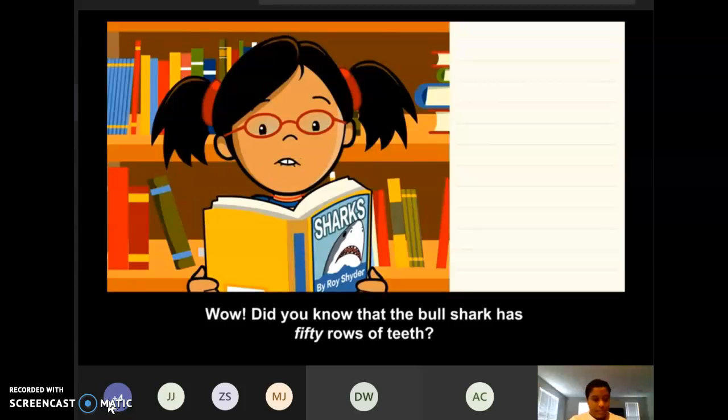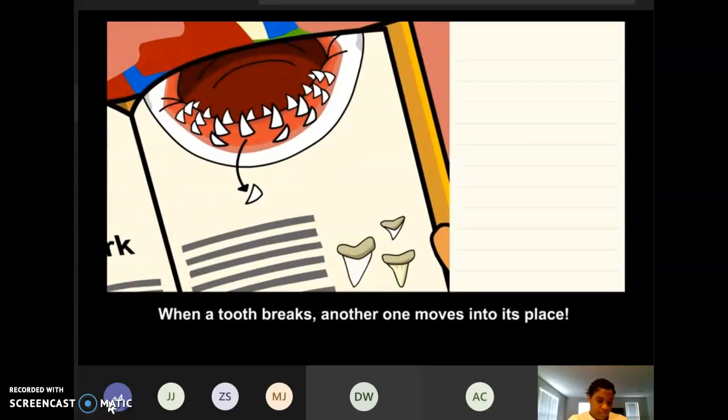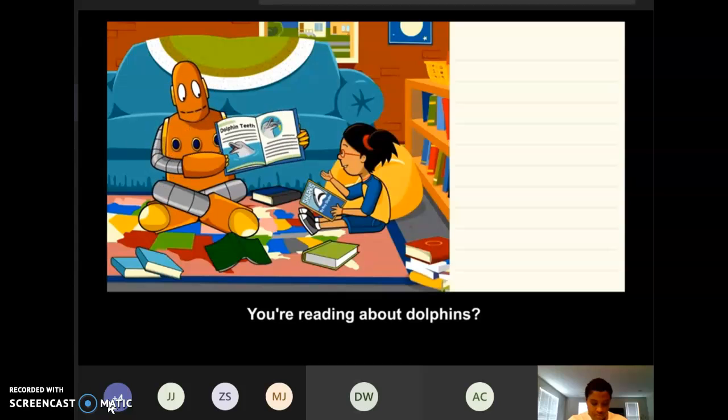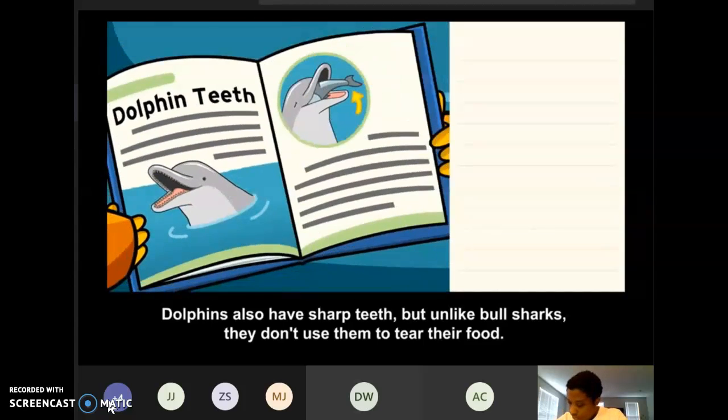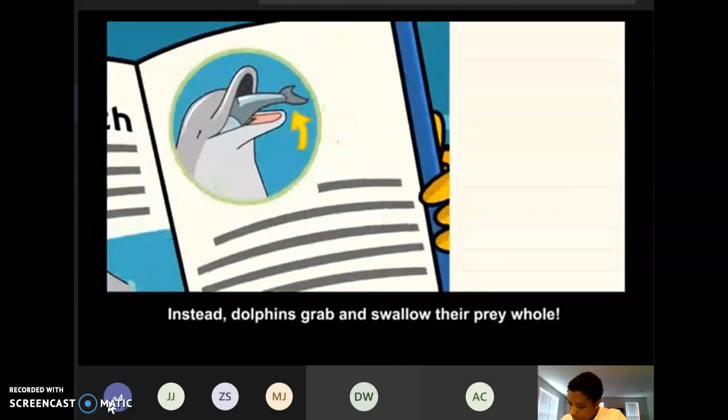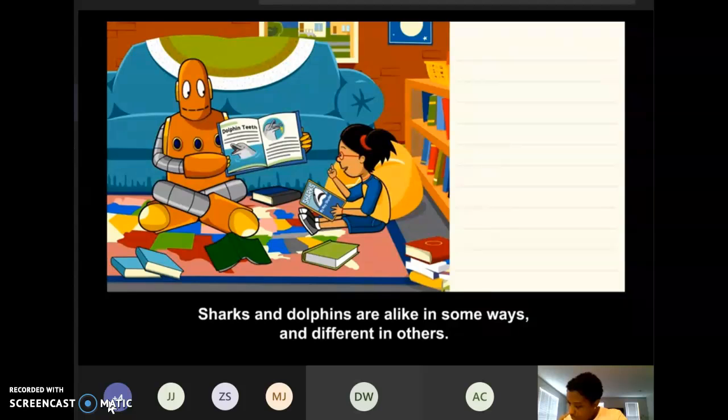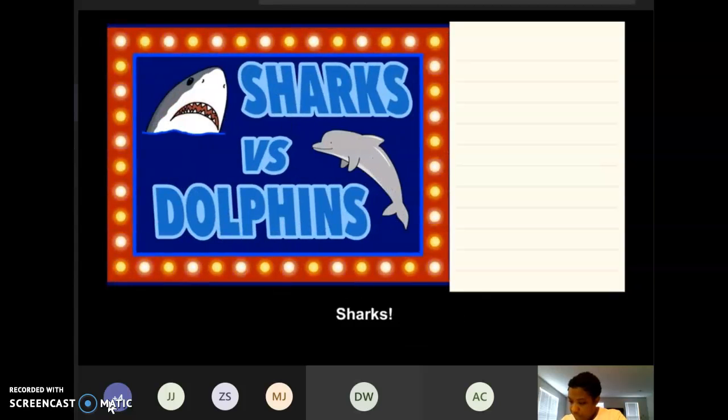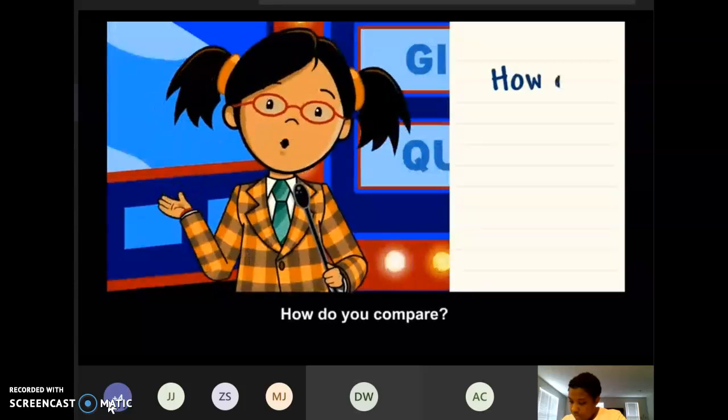Wow. Did you know that the bull shark has 50 rows of teeth? Bull sharks use their sharp teeth to bite and tear fish, turtles, and other prey. When a tooth breaks, another one moves into its place. You're reading about dolphins? Cool. Dolphins also have sharp teeth. But unlike bull sharks, they don't use them to tear their food. Instead, dolphins grab and swallow their prey whole. You're right, Moby. Sharks and dolphins are alike in some ways, and different in others. Looks like we need to play sharks vs. dolphins.